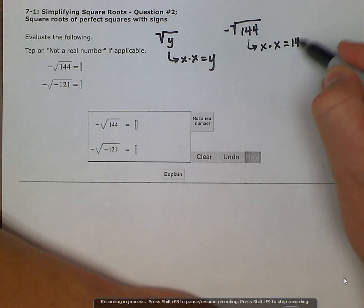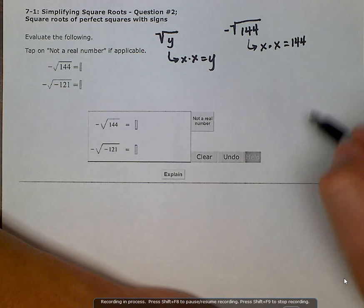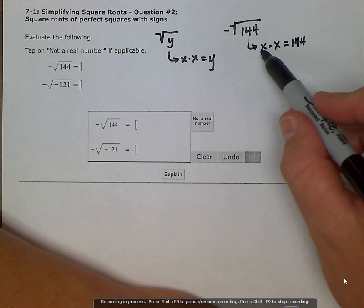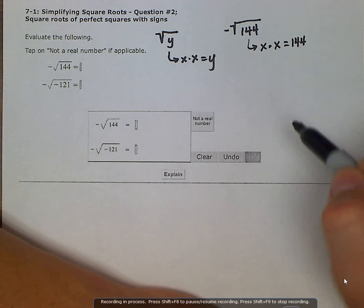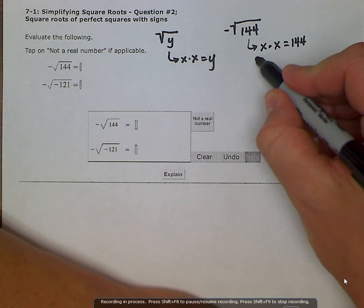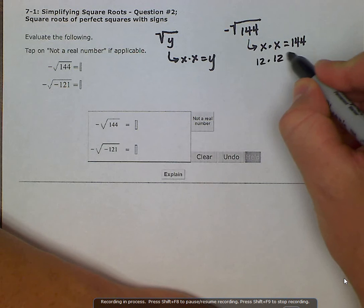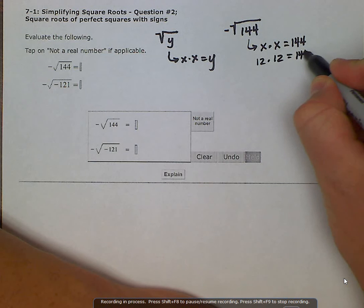And we remember that our perfect squares is just our natural numbers. What squared, what times itself equals 144? We know this is 12. 12 times 12 is equal to 144. Therefore the square root of 144 is 12.